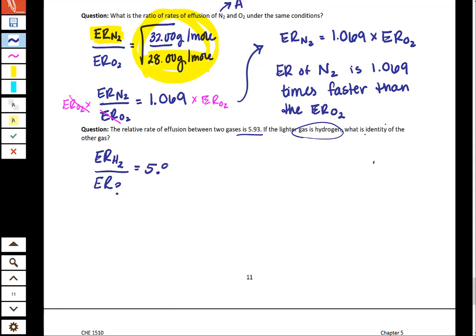What we're saying is that the effusion rate of hydrogen versus the effusion rate of an unknown gas is 5.93. When we calculate this, we need to say that the 5.93 is equivalent to the molar mass of the unknown divided by the molar mass of the hydrogen and the square root of that number. Let's start with the idea that we know what the molar mass of hydrogen is. The molar mass of hydrogen is about 2 grams per mole. We don't know what the molar mass of the unknown gas is.